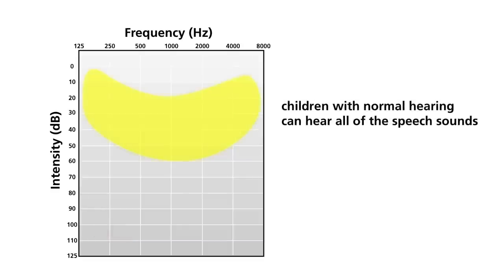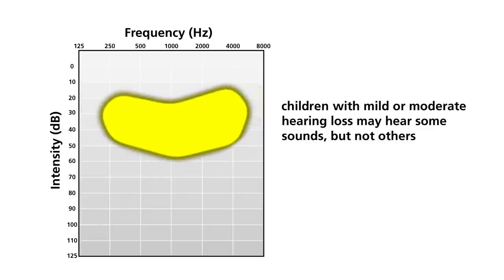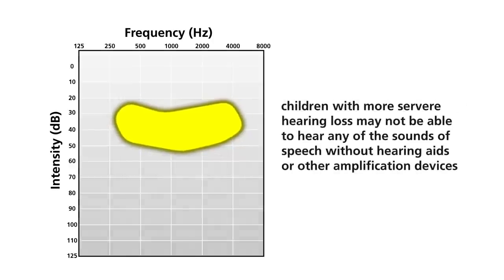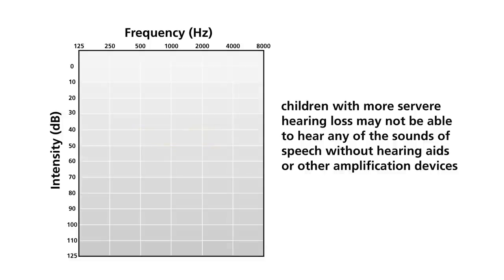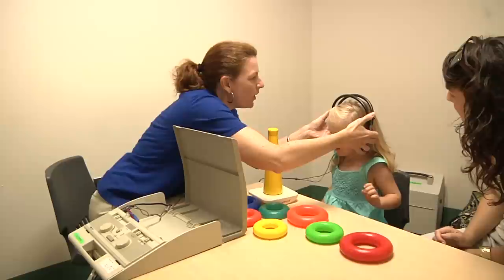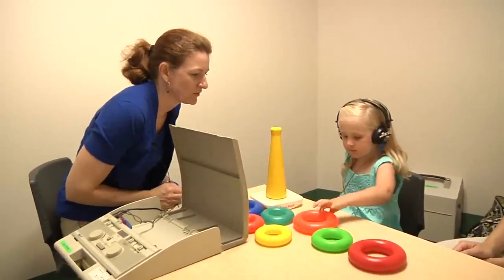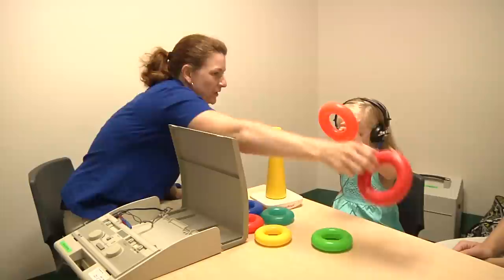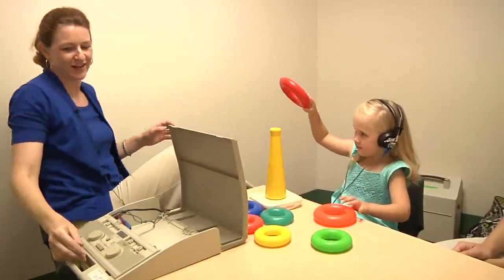Children with normal hearing can hear all of the speech sounds. Children with a mild or moderate hearing loss may hear some of the sounds but not others — to them, speech may sound muffled and difficult to understand. Children with more severe hearing loss may not be able to hear any of the sounds of speech without hearing aids or other amplification devices. The sounds that a child with hearing loss perceives will vary depending upon the degree and type of hearing loss. A computer-simulated hearing loss is sometimes used to demonstrate to parents and teachers how speech sounds when parts of the signal are missing.